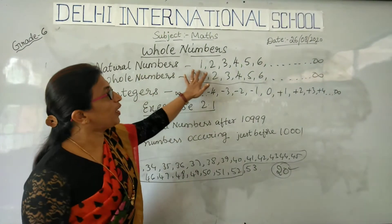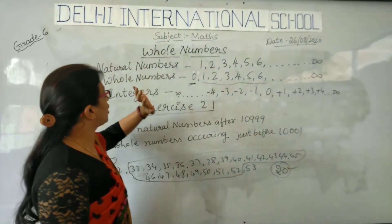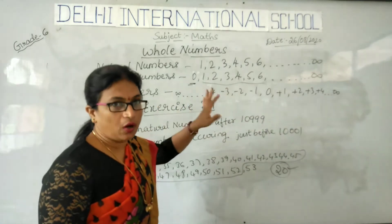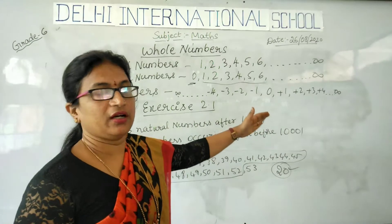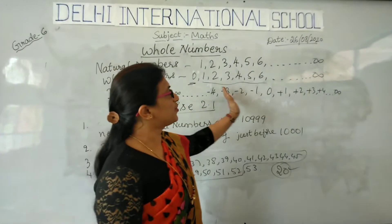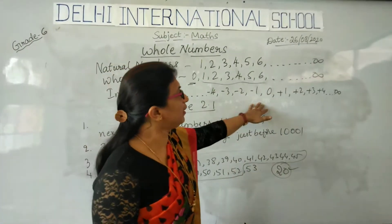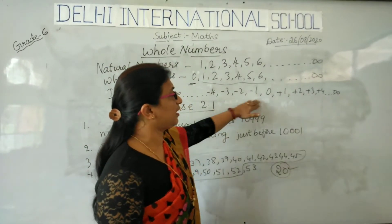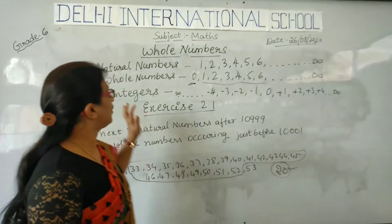Natural numbers means 1 to infinity — whatever numbers come from 1 to infinity are all natural numbers. Whole numbers means including 0, whatever natural numbers are there, those are all called whole numbers. Integers have positive integers to the right direction of 0 and negative integers which come on the left direction of 0. These are less than 0, and those are the numbers greater than 0. Both are integers.